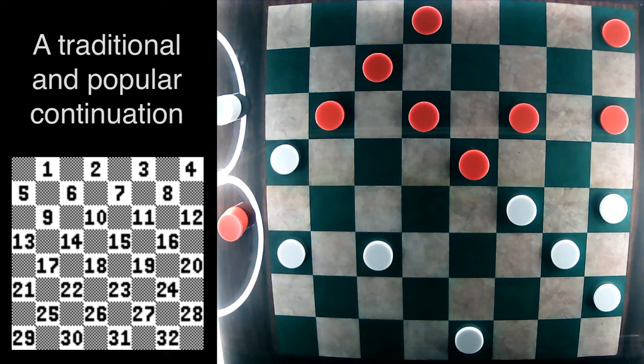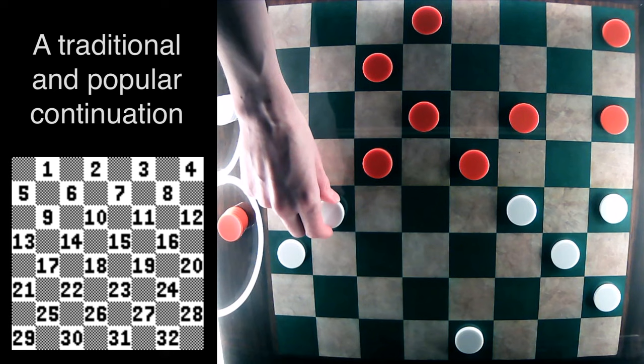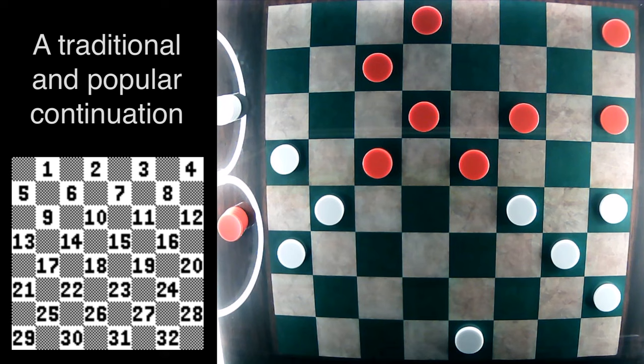8-11. 32-28, creating a column here. 9-14. 22-17, really tightening up the board with white flanking the red center.